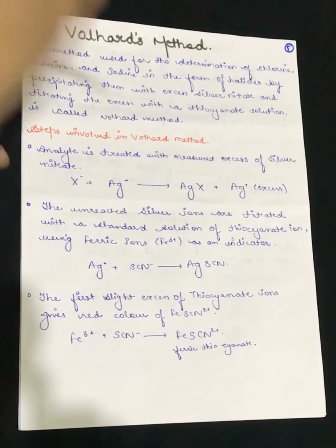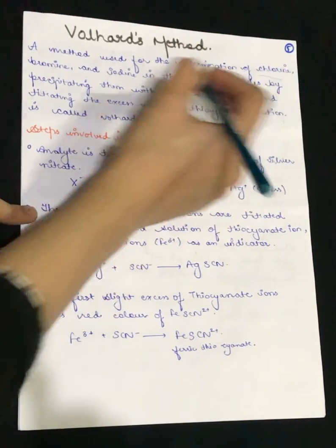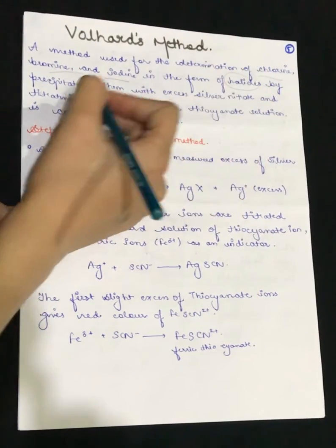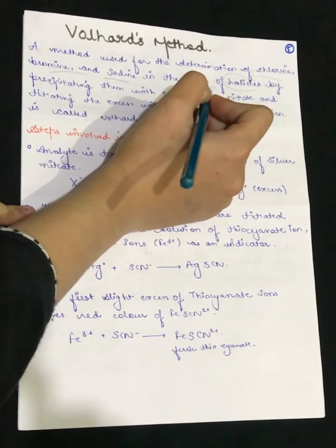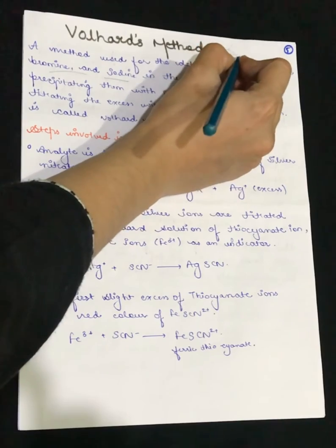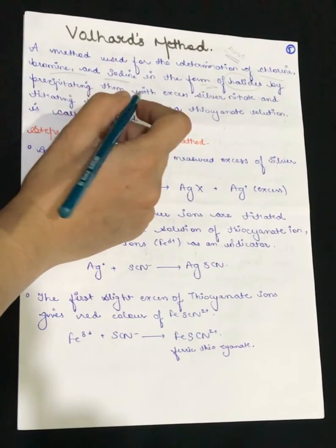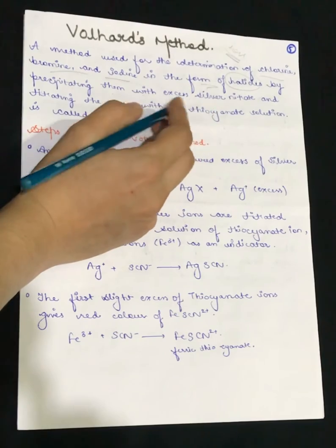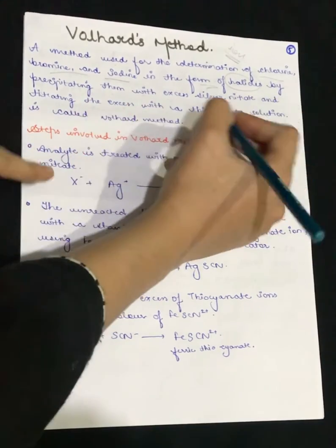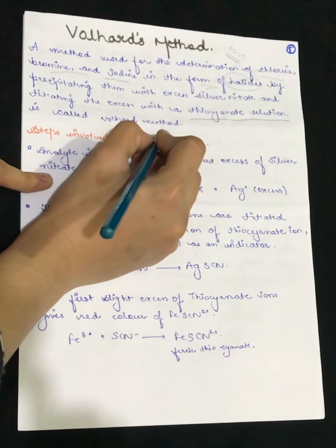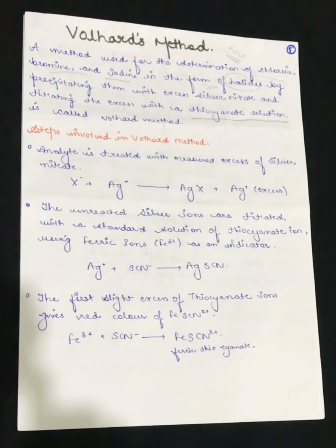The Volhard's method is used for determination of chlorine, bromine, and iodine — that is, the halides — by analyzing them in ionic form. The halides are precipitated with excess silver nitrate, and then the excess silver nitrate is titrated with a thiocyanate solution. The indicator used is ferric ions (Fe³⁺).